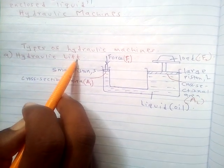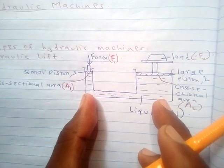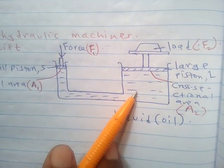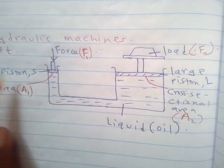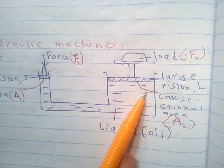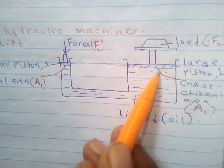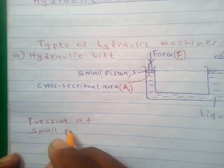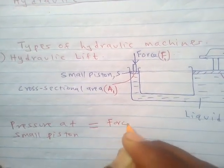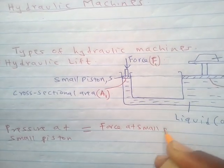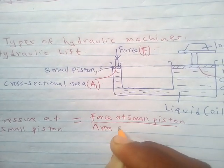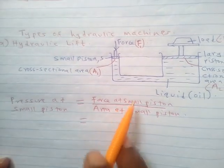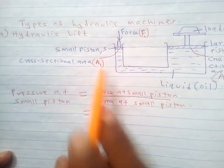Looking at the hydraulic lift, we have a sample diagram of how it works. They work on Pascal's Principle, which tells us the pressure applied at one part of a liquid is transmitted equally to all other parts. So the pressure at the smaller piston must equal the pressure at the larger piston, when pistons are at the same level. The pressure at the small piston is F1 divided by A1, where F1 is the force and A1 is the area at the small piston.